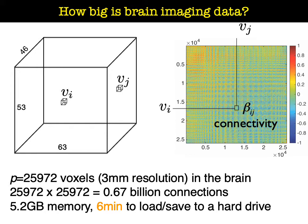In the case of the three millimeter resolution, we have more than 20,000 voxels. That basically gives us 0.7 billion network connections if you are trying to do network modeling. So this is gigantic data — it takes about five gigabytes of memory, and on a slow computer it may take six minutes just to load and save it to hard drive.